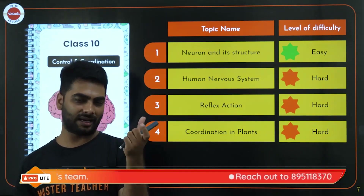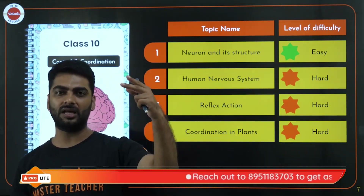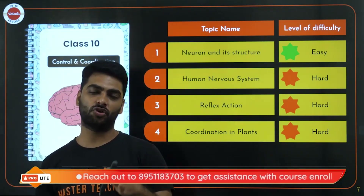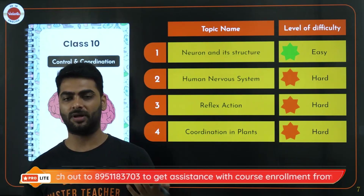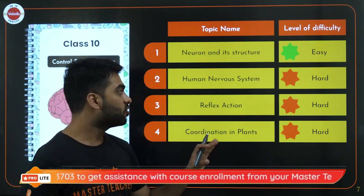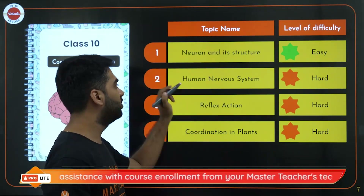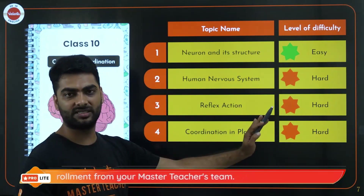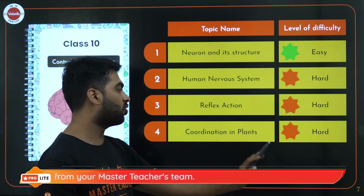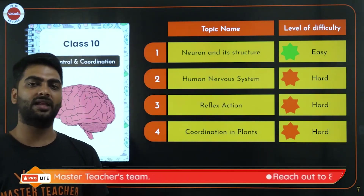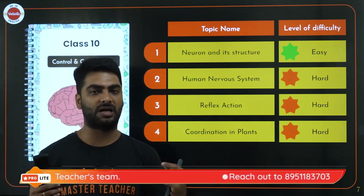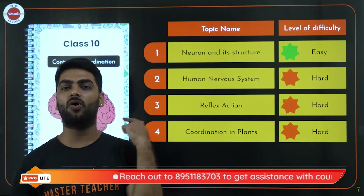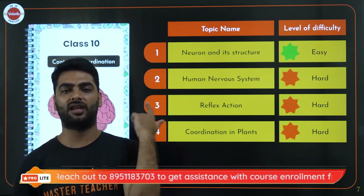You also need to learn about synapse and chemical and electrical impulses, which can get a little technical. Coordination in plants involves geotropism, thermotropism, phototropism, and related tropisms, which can also be tricky. The only tricks to master all of this: watch my sessions, and keep reading the NCERT again and again until you know it like the back of your hand.